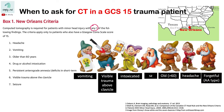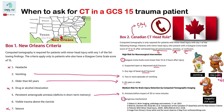anterograde amnesia type. So any one of these findings will warrant a CT in a GCS 15 patient. Now how do we compare this criteria to another criteria, which is the Canadian criteria?